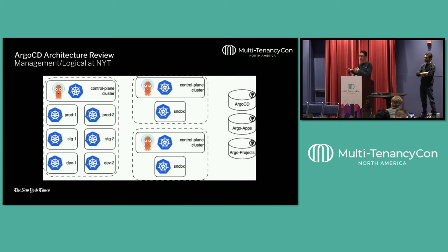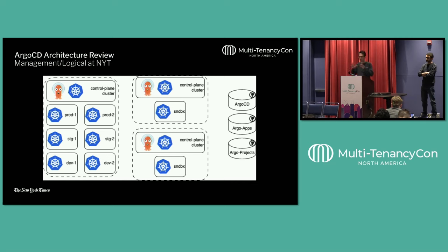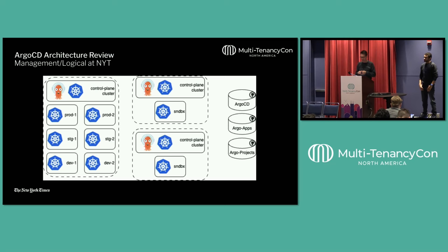For the Argo setup, we went with one Argo to rule them all — a single control plane version where one Argo deploys to all environments. Rather than installing Argo alongside each cluster or having separate Argo instances for dev, stage, and prod, this simplifies things for users: when they log in, they can see their apps running in dev, stage, and prod. We also use the Argo pull request generator so people can get previews of pull requests as soon as they open them.